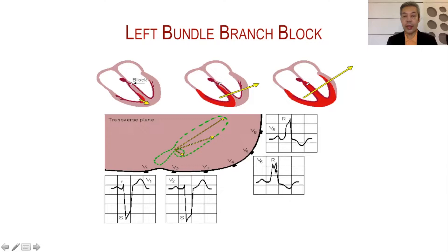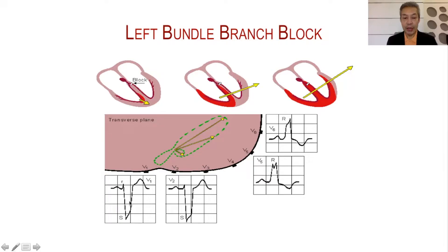This produces a wide QRS of more than 0.12 seconds, with notching of the QRS in V5 and V6 in left bundle branch block, and the opposite change in the opposite leads. The opposite lead of V6 is V1. So if there is broadening and notching of the R wave in V5/V6, the S wave will become widened and deeper in the opposite leads — a wide and deep S in V1.